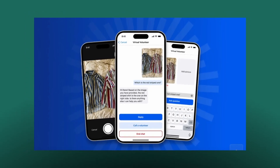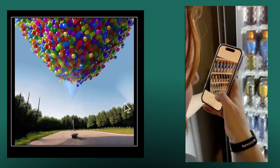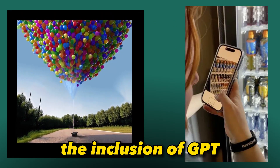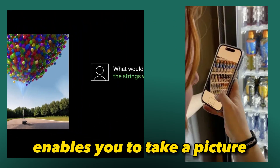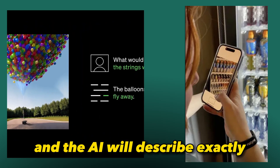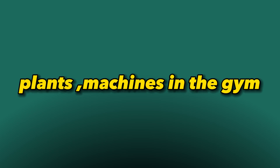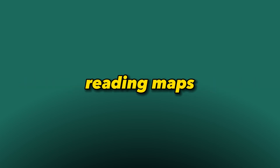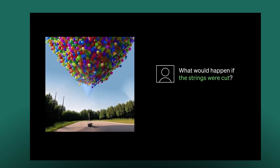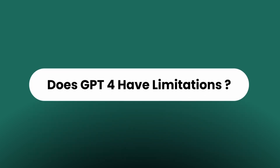While GPT-4's multi-modal application is not yet available to all users, OpenAI has already partnered with Be My Eyes — an app to help the visually impaired and low-vision users with their everyday activities. The inclusion of GPT-4 in the app enables users to take a picture of what they're looking at, and the AI will describe exactly what's on screen, including dresses, plants, gym machines, reading maps, and making informed judgments — much like a human volunteer would.